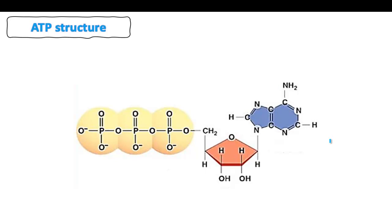ATP can be broken down into three parts. The first part is the phosphate group — specifically we have the first phosphate group, the second, and the third one. So we call it the triphosphate or the triphosphoryl group. These phosphoryl groups are attached with a high-energy bond.